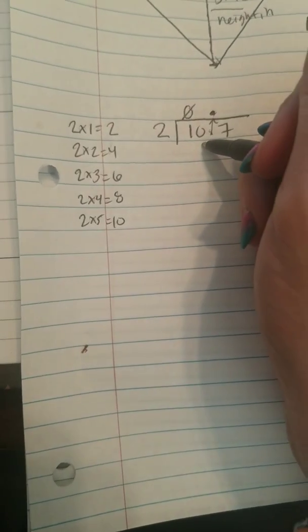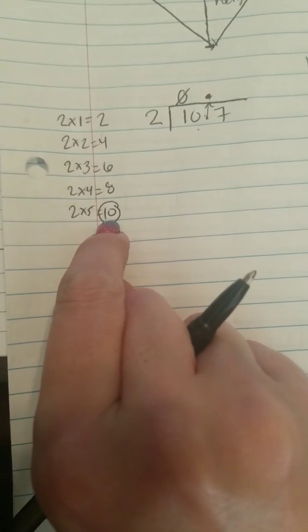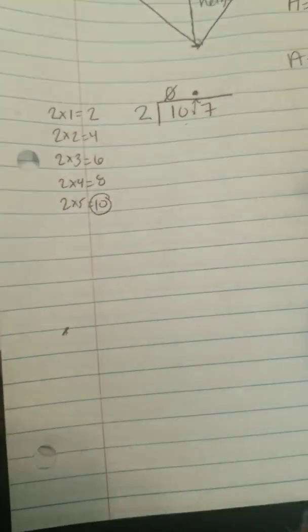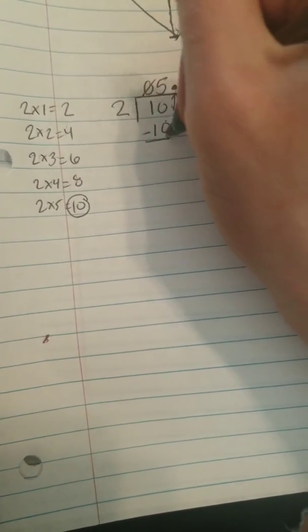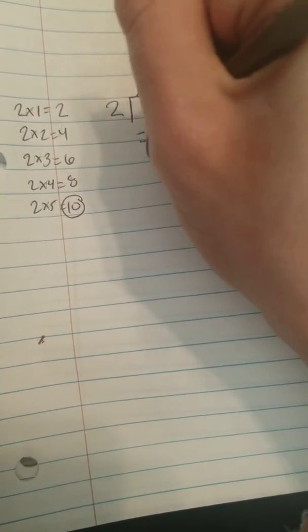So I need 10. This is exactly 10. How many groups of 2 did it take us to get to 10? It takes us 5 groups of 2. 5 groups of 2 is 10. 0 minus 0 is 0, 1 minus 1 is also 0.